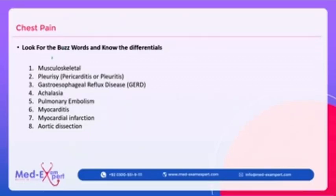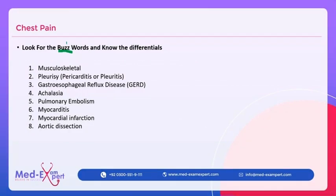Chest pain can be due to a variety of reasons. The important thing is that you can know buzzwords and scenarios — important things you can pick. In FCPS Part 1, multiple times questions repeat in chest pain. Scenarios repeat as is, so this lecture is very important.